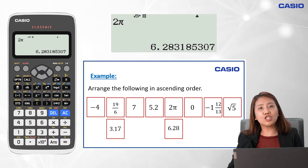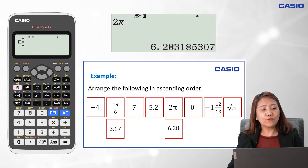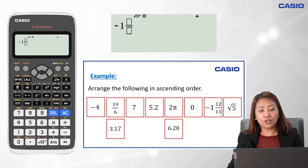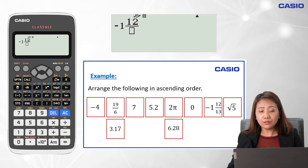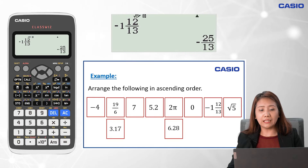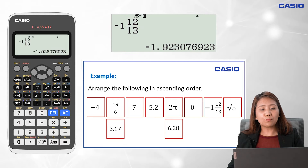Now let's change the mixed number to decimal form. We click on shift then the fraction key, input the whole number negative 1, arrow right, then input the numerator 12, arrow down, and the denominator 13. We click on equal sign, and that gives us a fraction of negative 25 over 13. We click on SD to change to decimal, and the value is approximately negative 1.92.